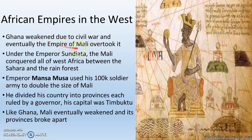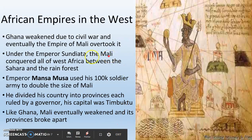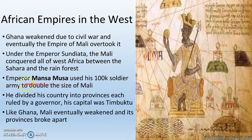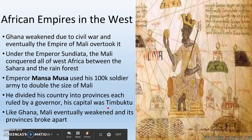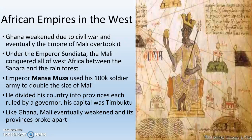Eventually, Ghana gets taken over by the Empire of Mali, under the Emperor Sundiata. Mali actually conquers all of West Africa, between the Sahara Desert to the north and the rainforest to the south. Under Emperor Mansa Musa, the size of Mali is going to double. Mansa Musa divides his country up into provinces, each ruled by a governor. His capital is the city of Timbuktu — yes, that is a real place. It was the capital of the Empire of Mali, and that's where Mansa Musa lived.